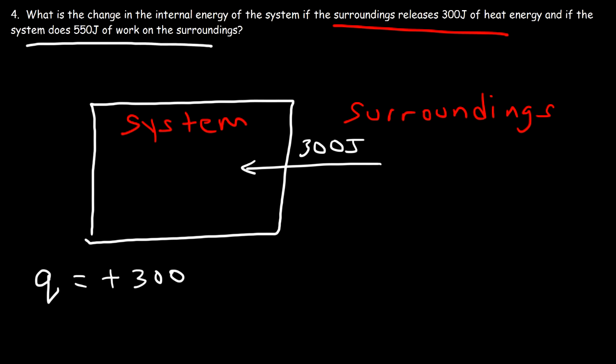If work is done by the system, the system loses energy as it expends energy doing that work, and the surroundings gains energy. Delta U = Q + W = positive 300 plus negative 550. The system gains 300 joules flowing in but loses 550 joules flowing out. The net result is the system loses 250 joules, so delta U is negative 250 joules — there's a net energy flow out of the system.